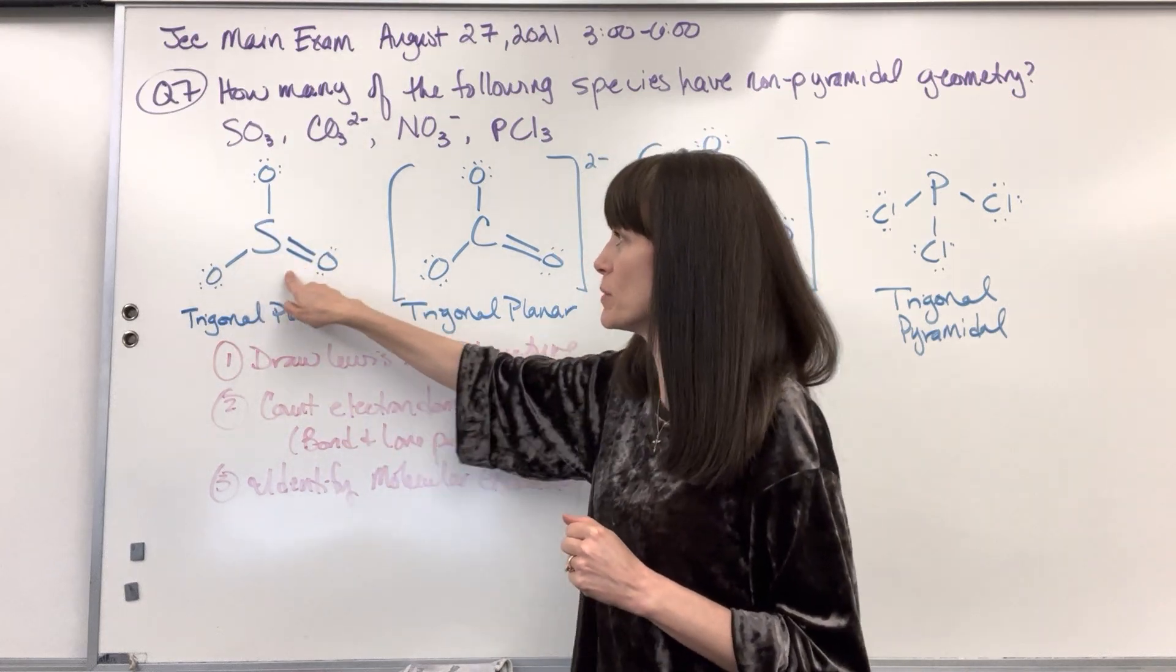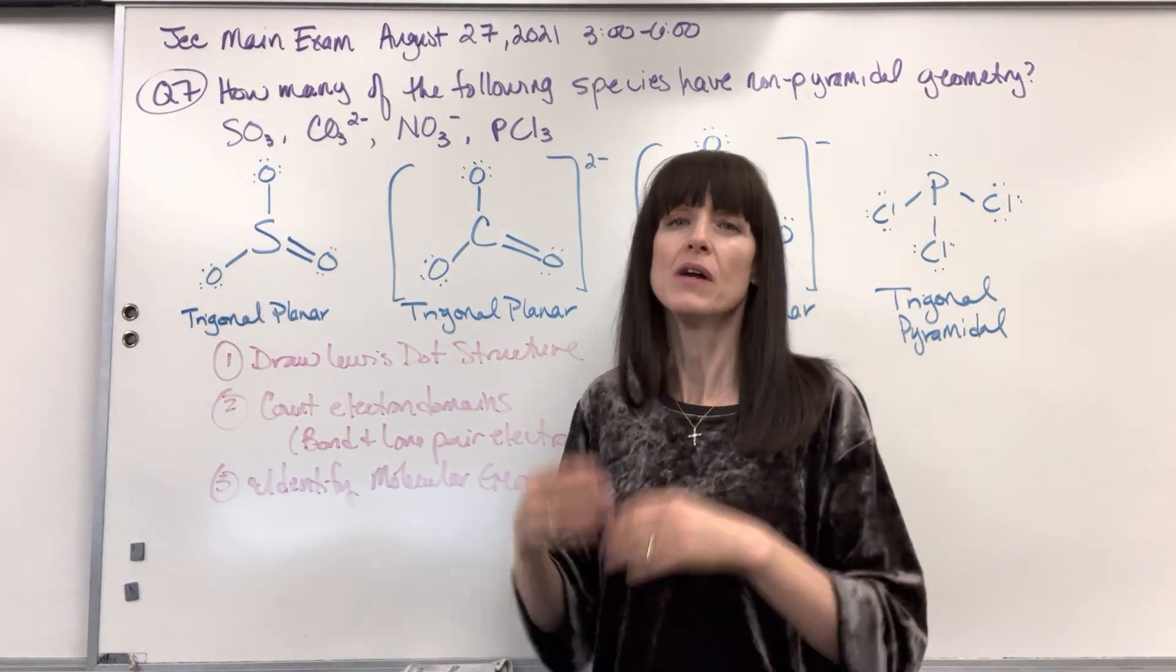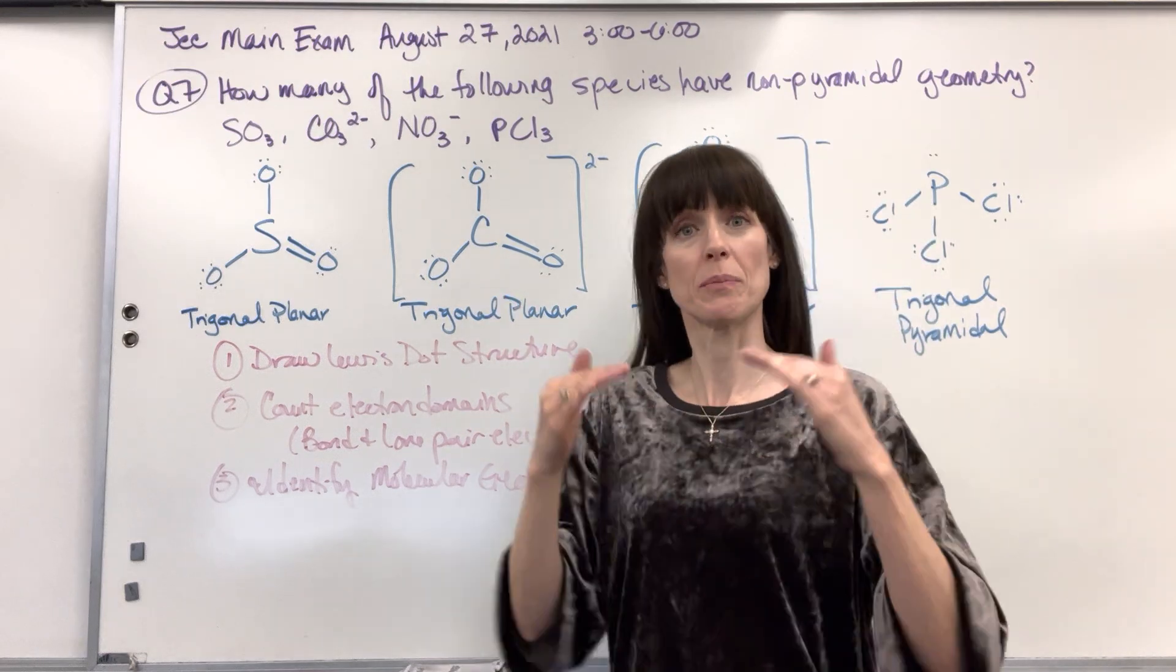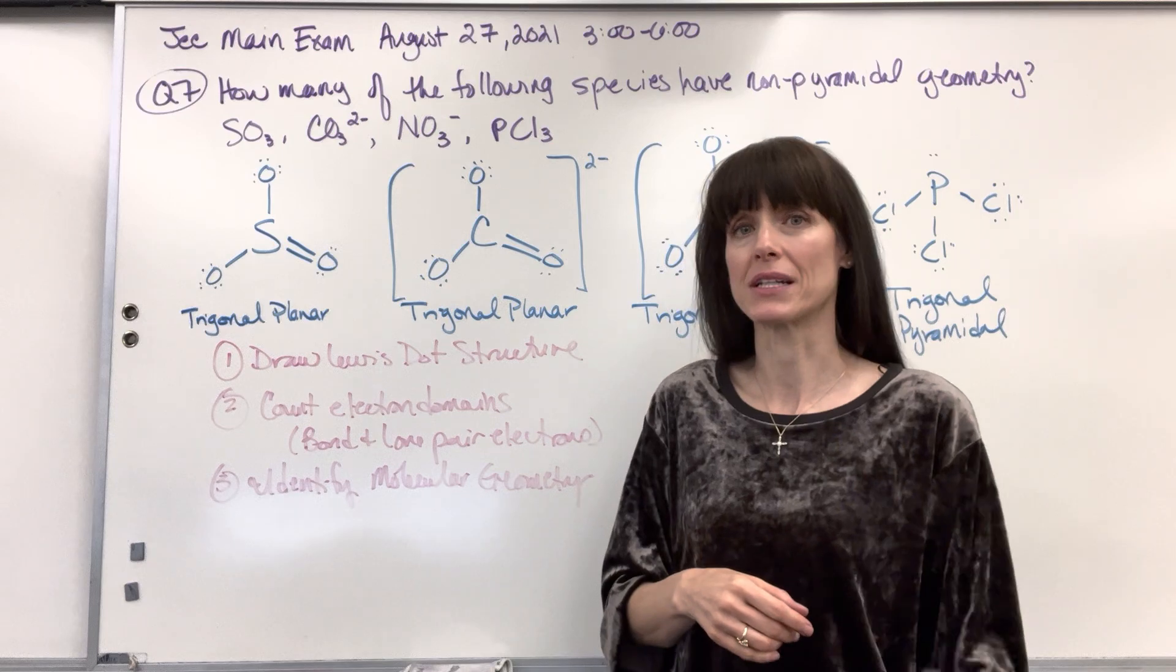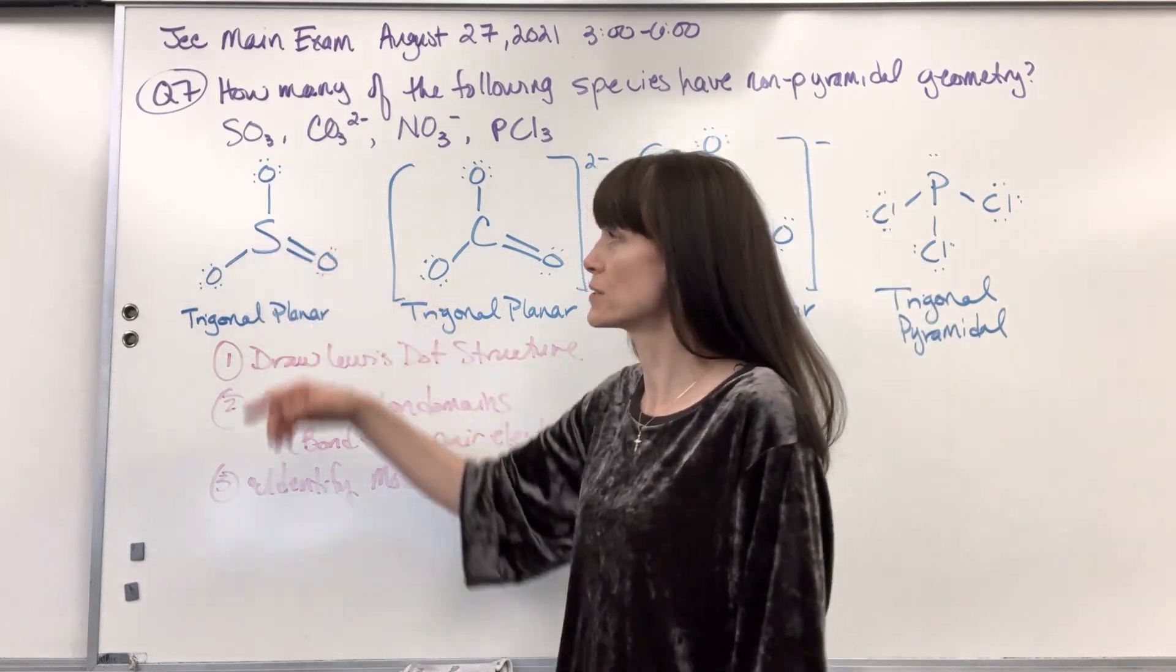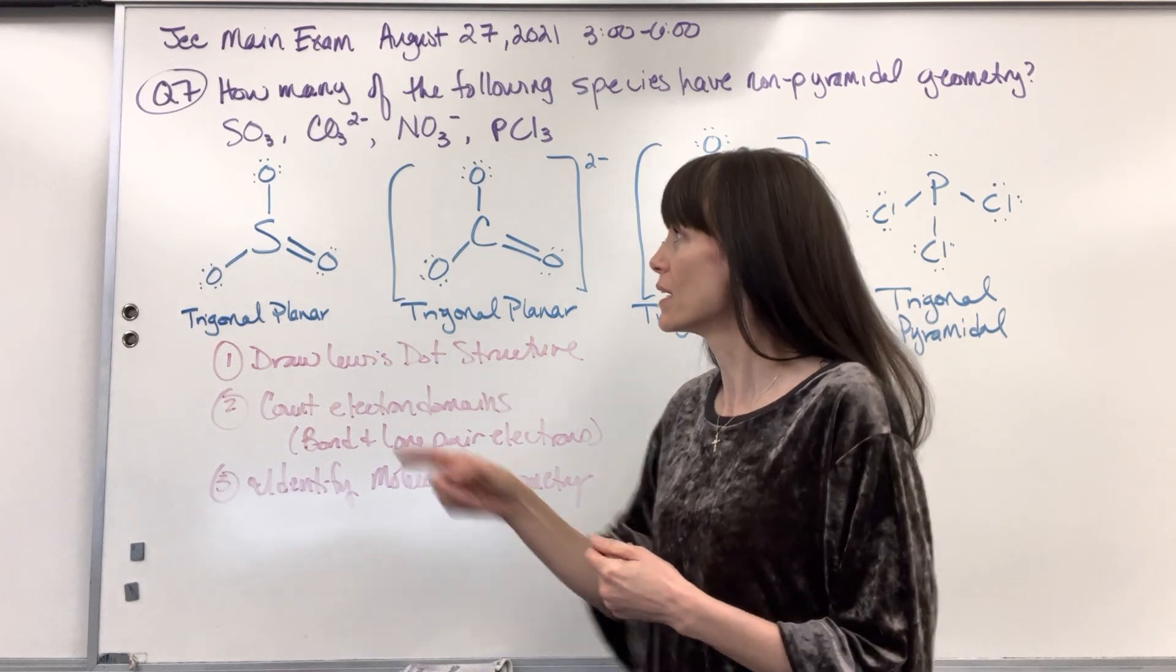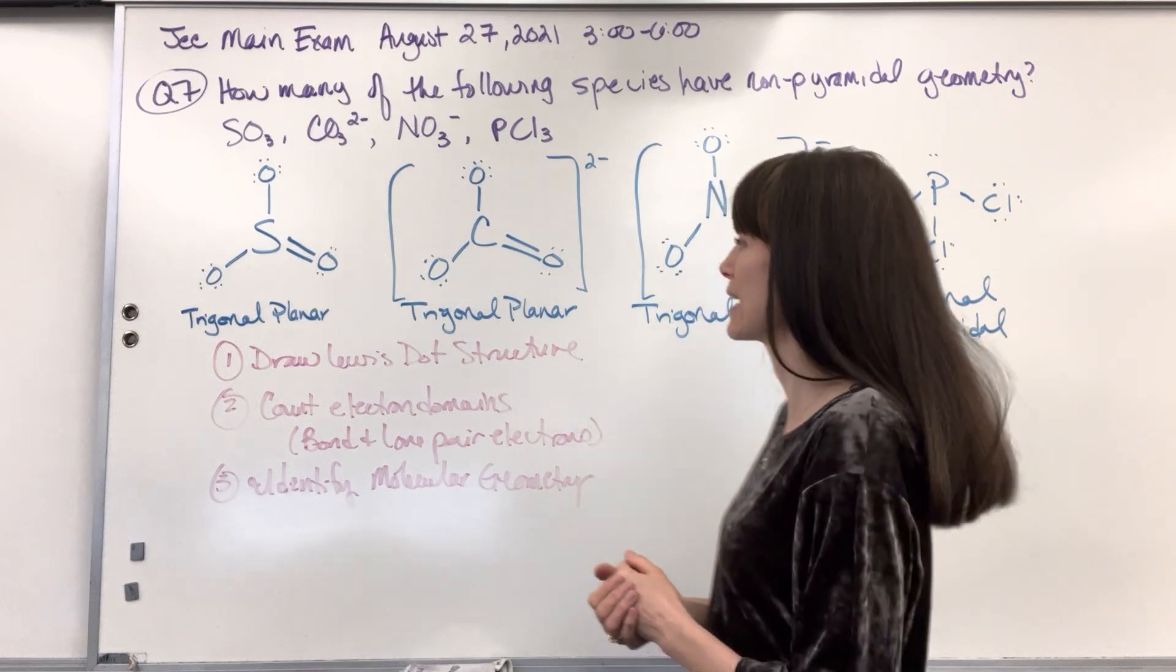So three electron domains, the maximum angle is 120 degrees. That is called trigonal planar. Remember, the theory in VSEPR is that electron domains always repel a maximum distance from one another, and that's why we can predict shape. So these three areas are going to repel a maximum distance of about 120 degrees. It looks like a triangle if you connect the vertices, and it's going to be on one plane.